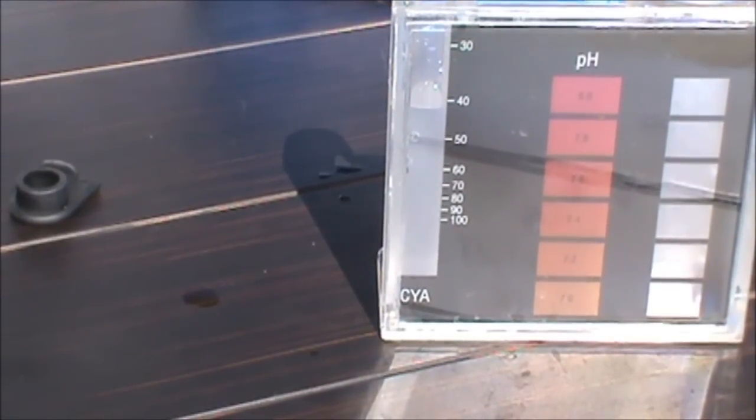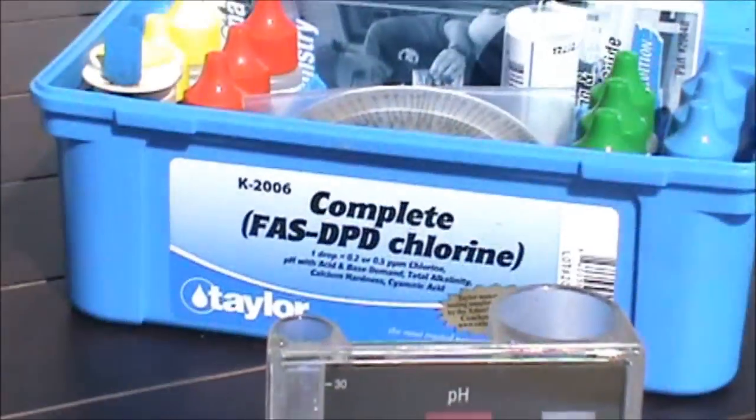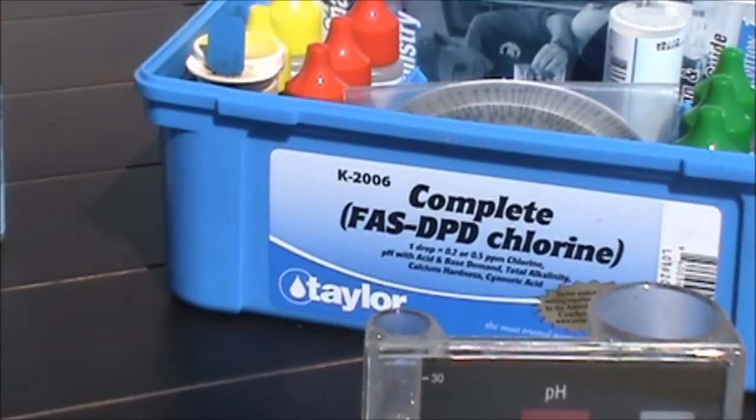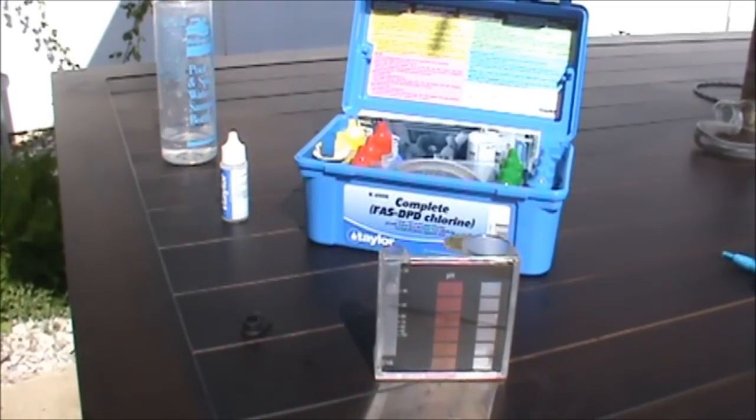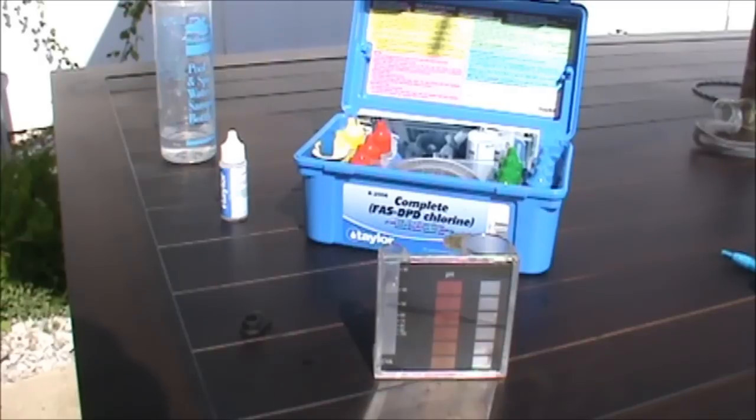So that concludes my testing with the K-2006 Complete FAS-DPD kit. I recommend that you join into the BBB, which stands for Bleach, Borax, and Baking Soda method of treating your pool. You'll have a trouble-free pool. There's also a website out there known as Trouble Free Pool and a forum. They're very helpful and they also have an online calculator.